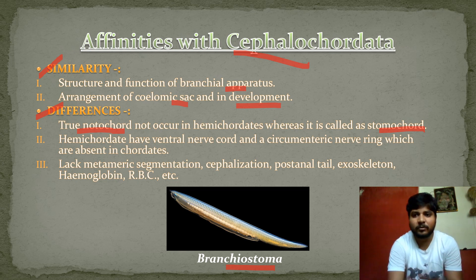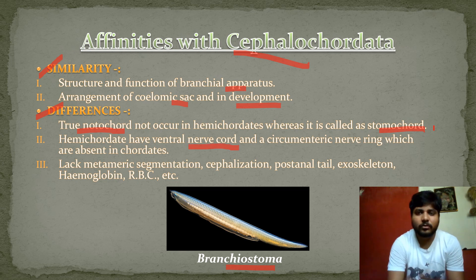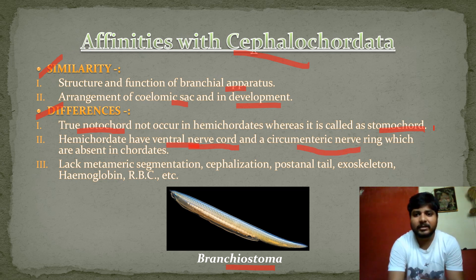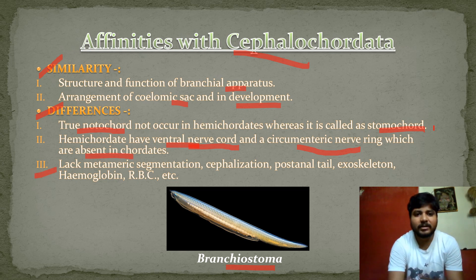In Balanoglossus, as in all hemichordates, the true notochord is absent and what is present is called the stomochord. Hemichordata also have a ventral nerve cord and a circumventric nerve ring. Differences include the lack of metameric segmentation, post-anal tail, exoskeleton, haemoglobin, and RBCs.